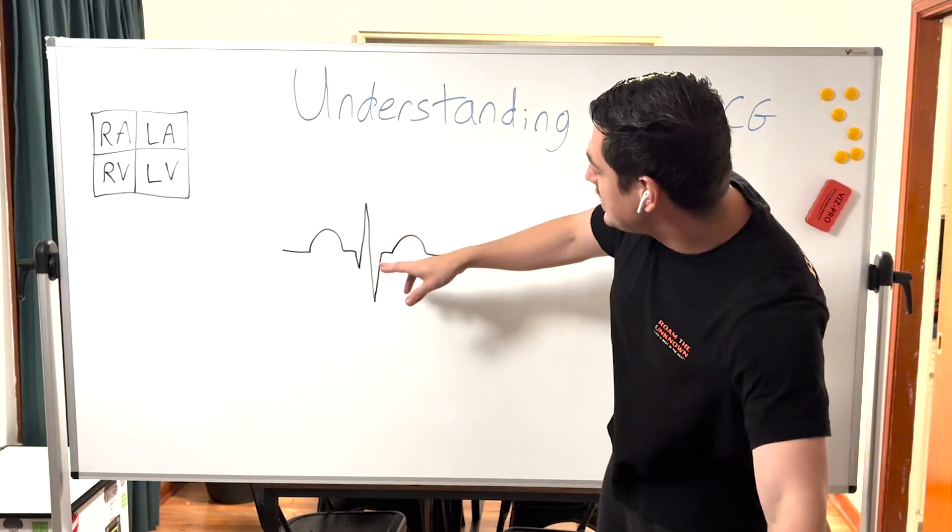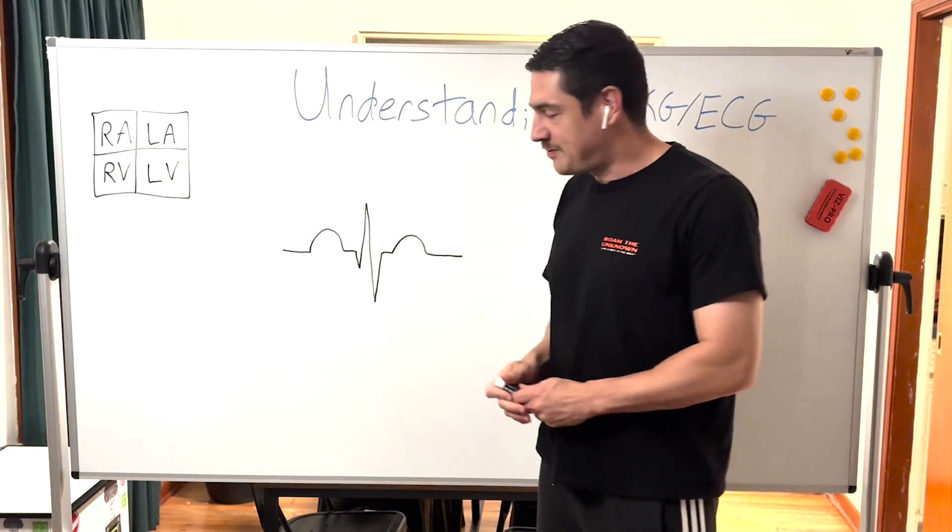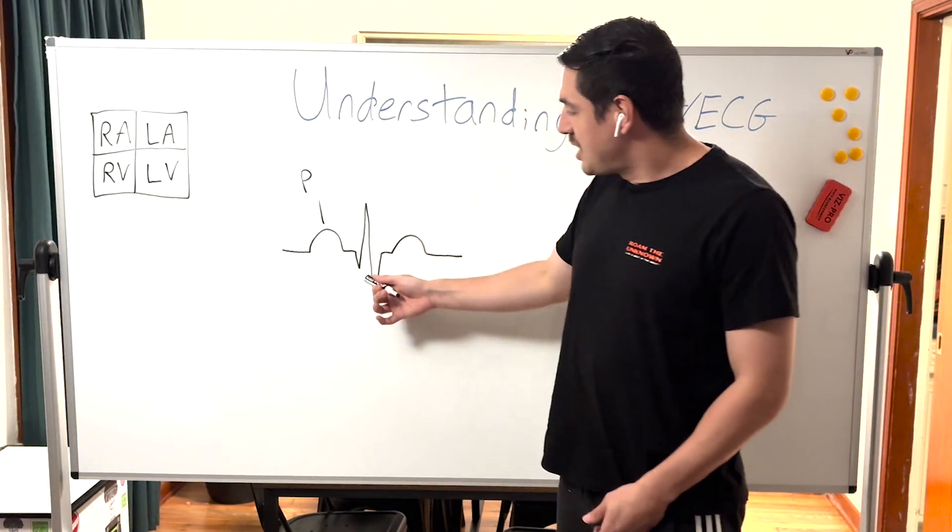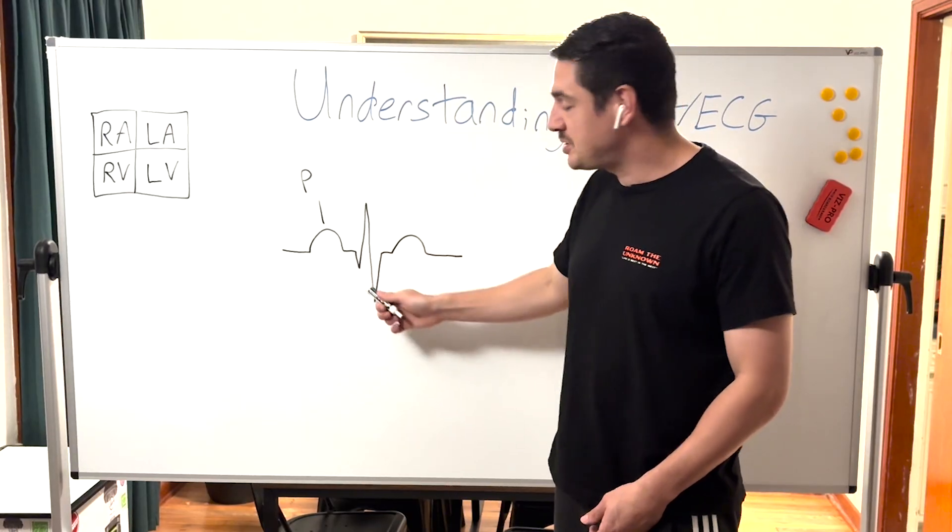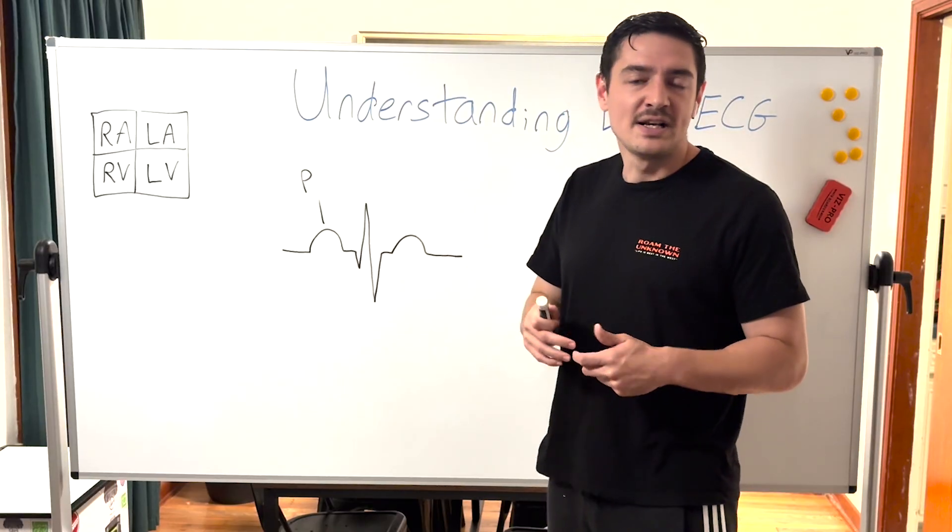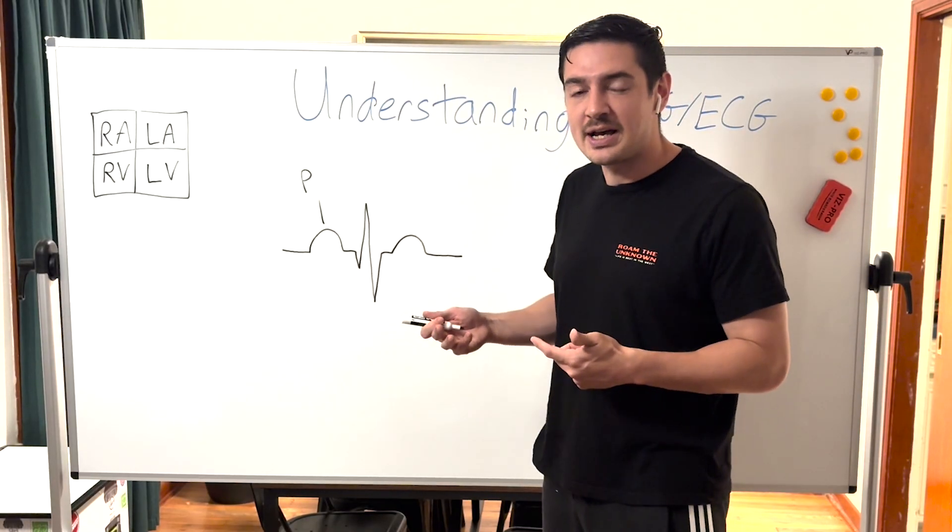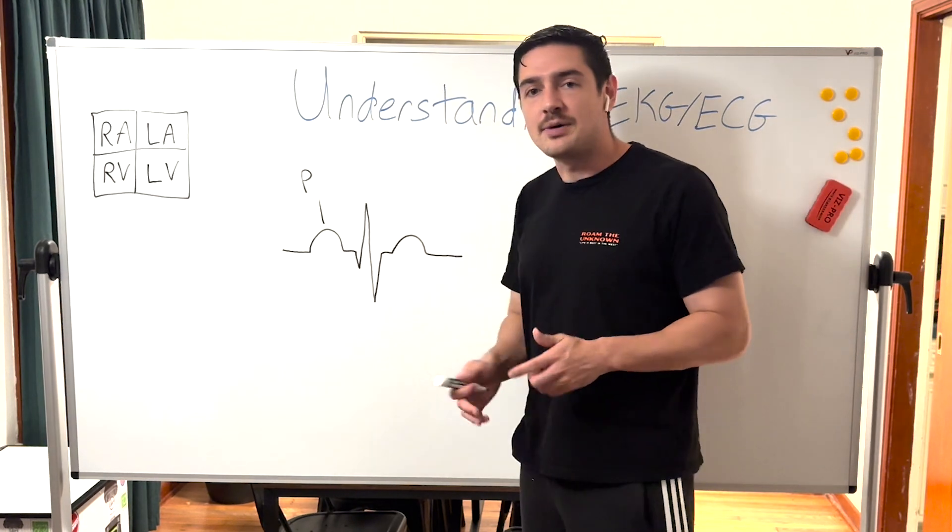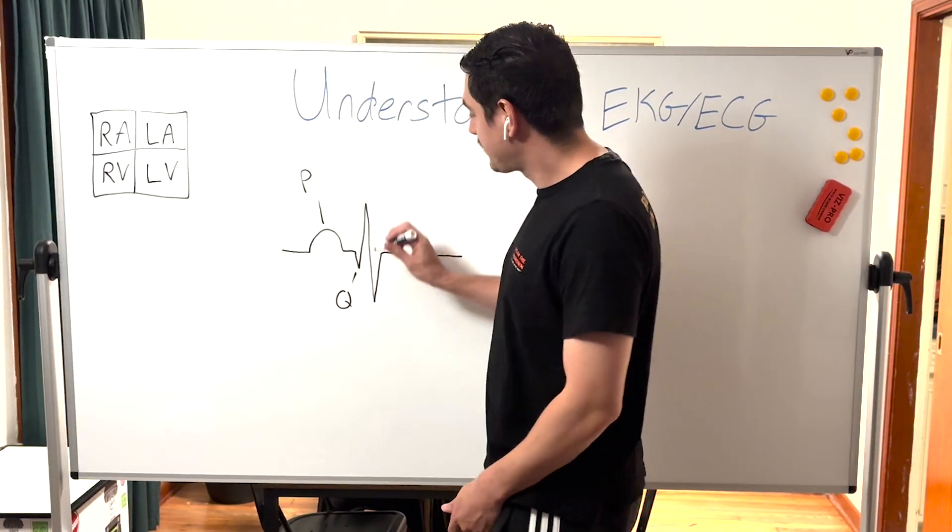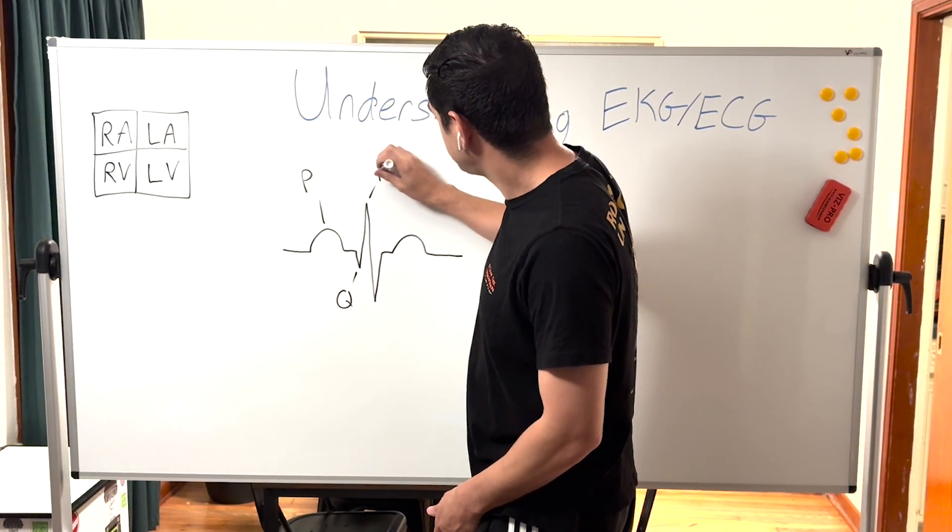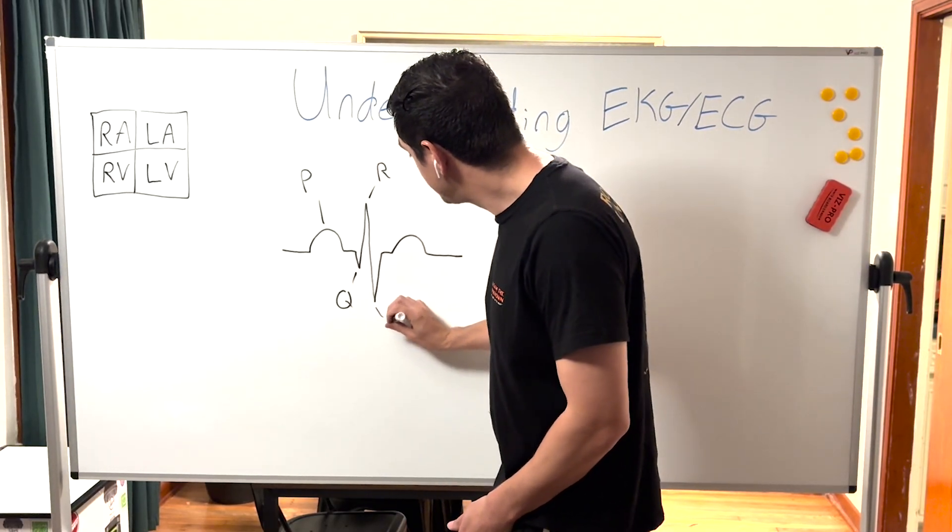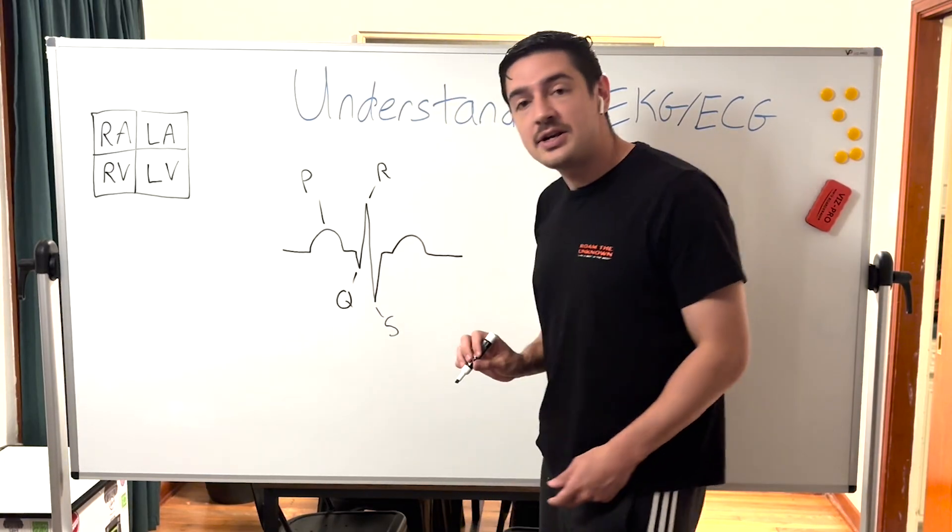Right here you have what's called a P wave. Sometimes patients have a Q wave, sometimes they don't. I believe it's indicative of a past cardiac event or past lack of oxygen moment, but don't think too much about that right now. We have our Q, we have our R wave here, and then we have our S, and then we have our T wave.